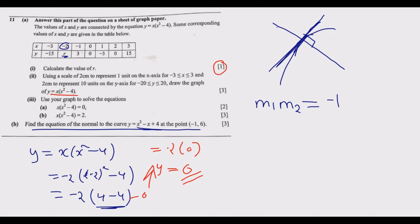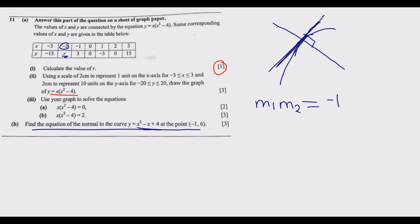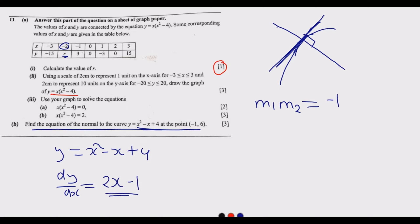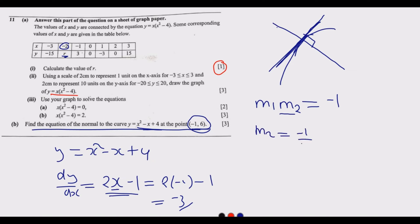To find the gradient of the tangent, differentiate the function. We have y = x² - x + 4, so dy/dx = 2x - 1. At the point (-1, 6), substitute x = -1: gradient of tangent = 2(-1) - 1 = -3. Therefore, the gradient of the normal is m₂ = -1/m₁ = -1/(-3) = 1/3.